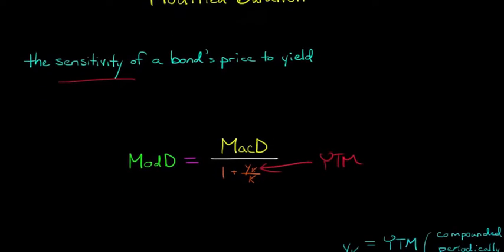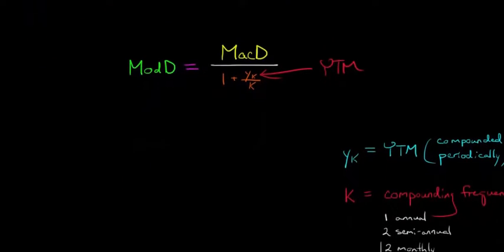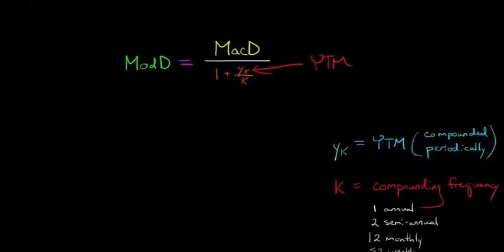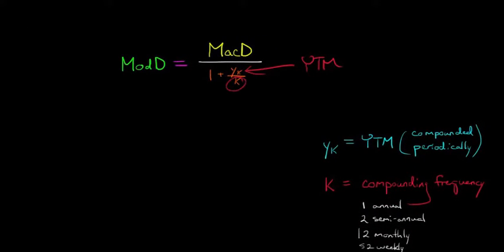And this Y_K is just the yield to maturity. The K is the number of periods during which we're compounding. So if it's semi-annual compounding, then this K would be 2.